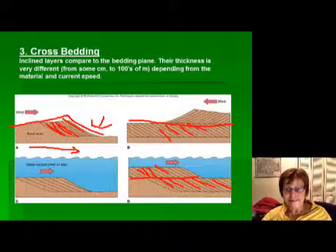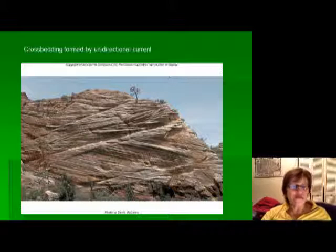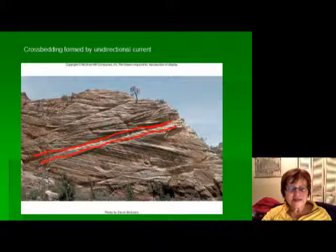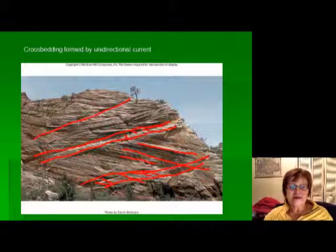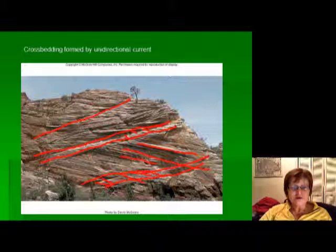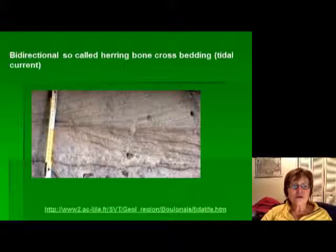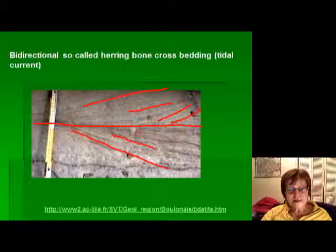This image shows very typical wind-carried cross bedding — the general direction of the foresets is the same, but one layer is short, another much thicker, with slightly different angles. This picture was taken in Zion National Park, which is full of wind-carried cross bedding. This other image shows typical marine cross bedding where one tide brings foresets in one direction and the opposing tide brings them the other way — we call it herringbone cross bedding, typically formed by tidal currents.